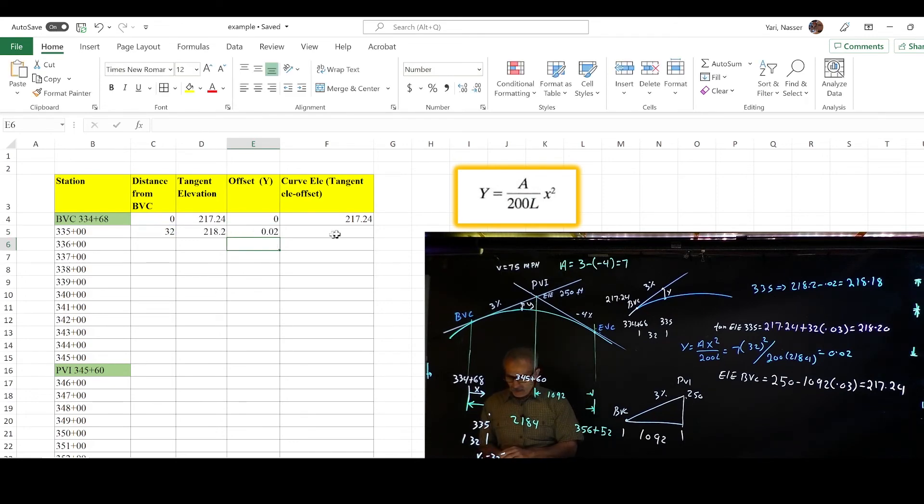Enter, and then you go to the next cell, which obviously is equal cell D5 minus cell E5, enter, and there is the result, 218.2.